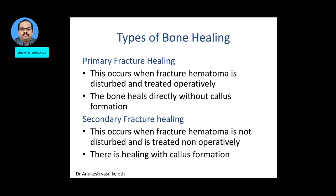Regarding bone healing types: primary fracture healing is where the fracture hematoma is disturbed by surgery to correct the fracture, and the bone heals directly without callus formation. This includes contact healing, where fracture ends have direct contact, and gap healing where there is a gap between ends. Secondary fracture healing is where the hematoma is not disturbed and is treated non-operatively, resulting in healing with callus formation.